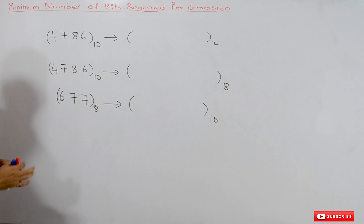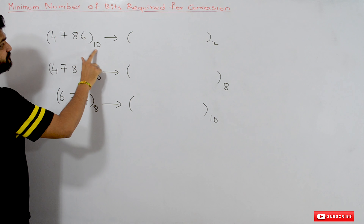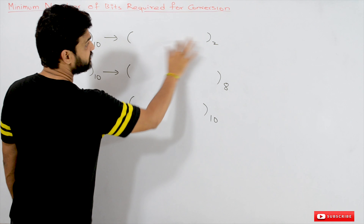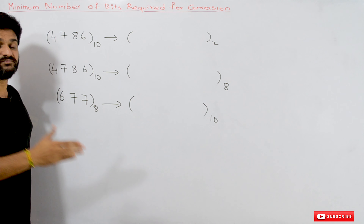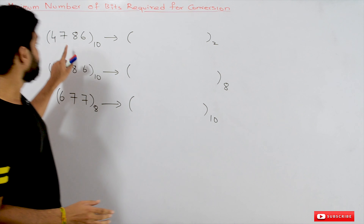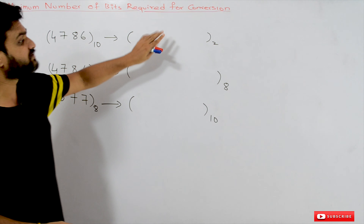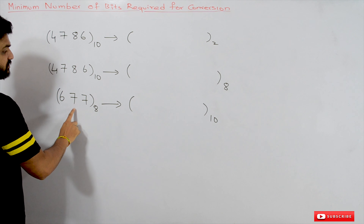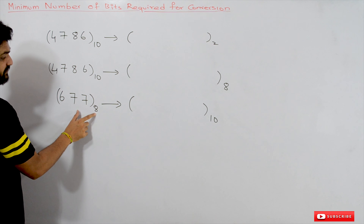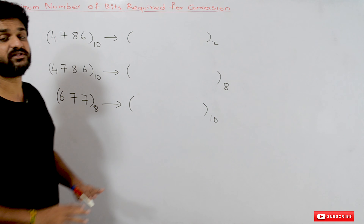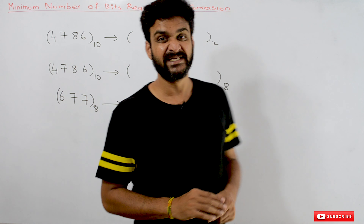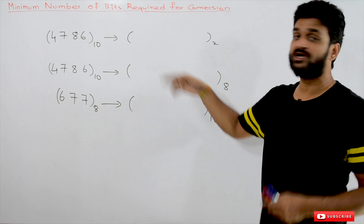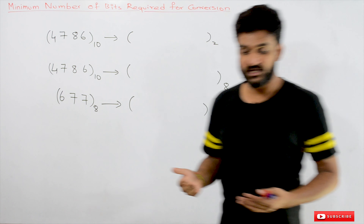For example, if a number is given in base 10, what are the minimum number of bits required to convert it into base 2? Similarly, what are the minimum number of bits required to convert it into base 8? These are the types of questions frequently asked in GATE. To find the answer, we could convert the number into the target base and count all the digits.